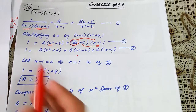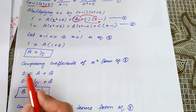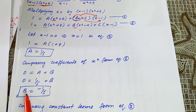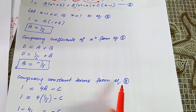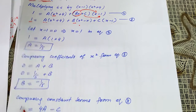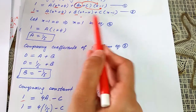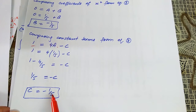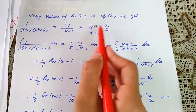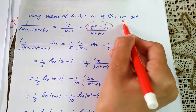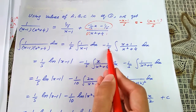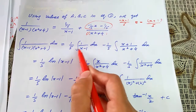Comparing coefficients of x²: on the left, 0 (no x² term); on the right, a + b. So 0 = a + b, giving b = -1/5. Comparing constant terms: 1 = 4a - c. Substituting a = 1/5 and simplifying gives c = -1/5. Substituting a, b, c into equation 1 gives: 1/(5(x - 1)) + (-x - 1)/(5(x² + 4)), simplifying the numerator as -(x + 1)/5.